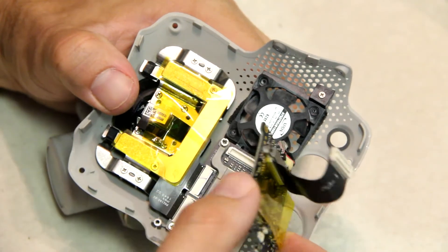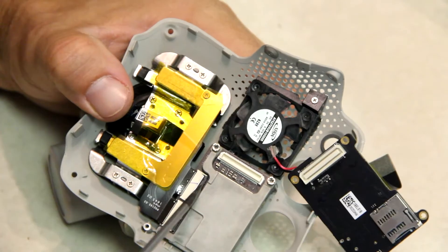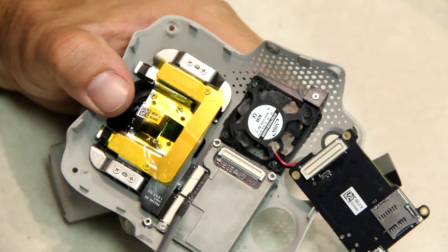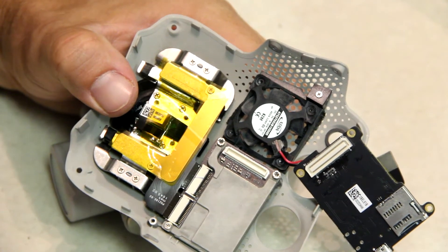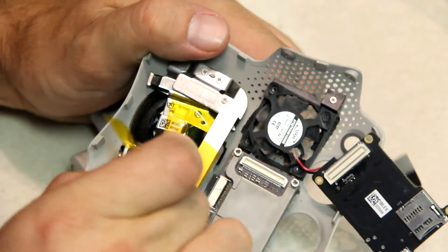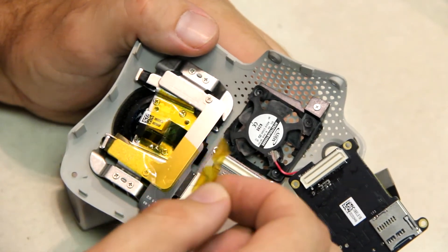You want to gently pop out that circuit board. From here you have these two little flippers where you flip them up and then the ribbon cable will be able to slide out. Go ahead and remove this tape right here.